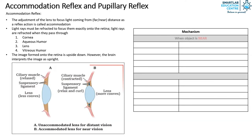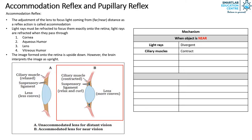When the object is near, the light rays entering the eye are divergent. The ciliary muscles contract. The suspensory ligaments slacken. This causes the lens to be thicker and more convex, decreasing the focal length.